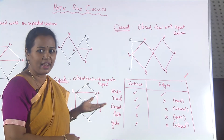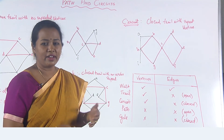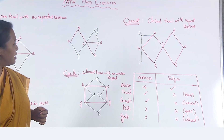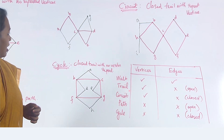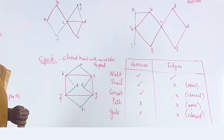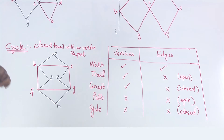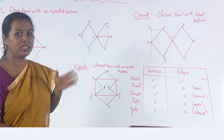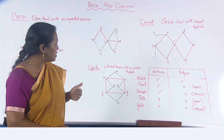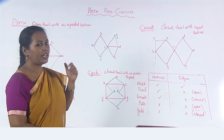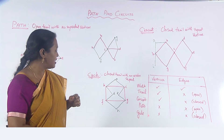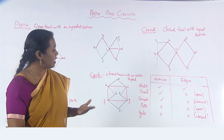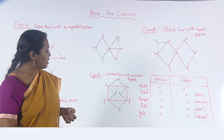Let us now do a small revision. A walk is where both vertices and edges can be repeated. A trail is where vertices may be repeated but edges are not repeated, and it is open-ended (starting and ending points are different). A circuit has repeated vertices but no repeated edges, and it is closed. A path has no repeated vertices and no repeated edges, and it is open. A cycle has no repeated vertices, no repeated edges, and it is closed.